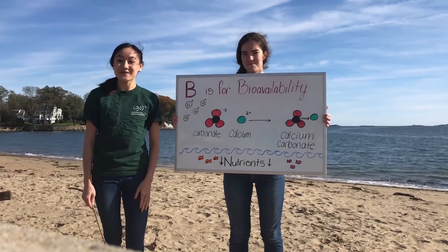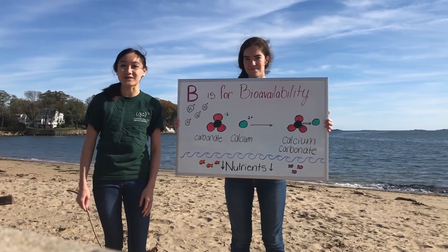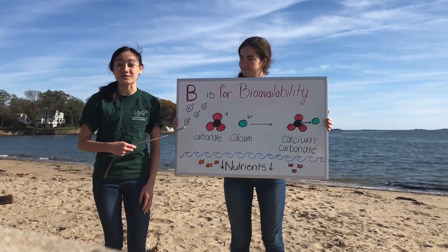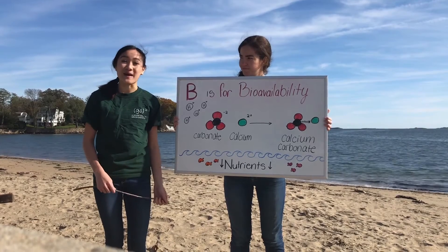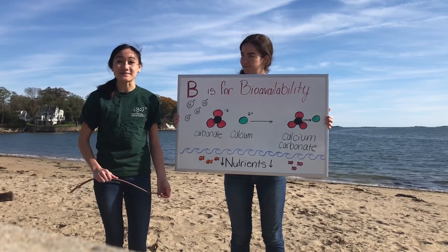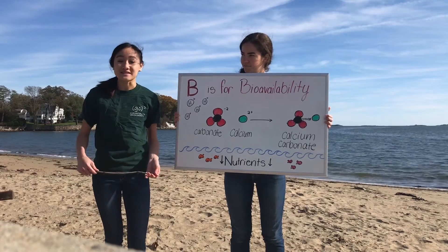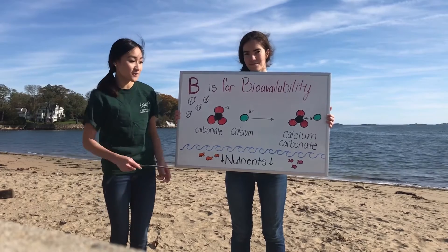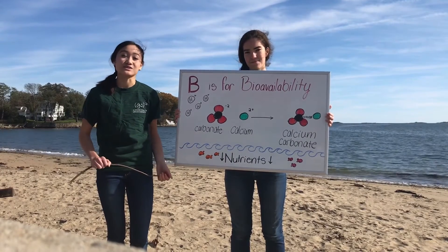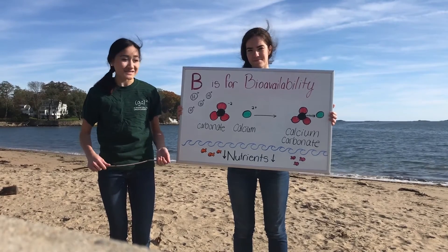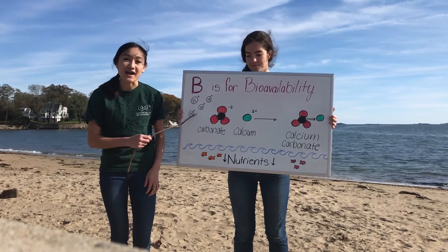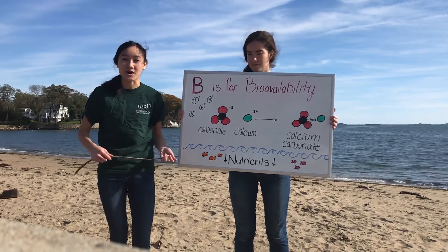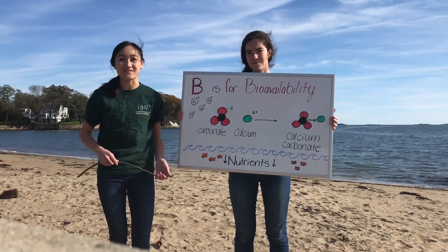B is for bioavailability, which is the amount of nutrients in water that organisms can use. These loose hydrogen ions do more than just lower the pH level — they also decrease the bioavailability of certain substances in the ocean. Two substances found in the ocean are carbonate and calcium, which join together to form calcium carbonate, which is very important to organisms in the ocean. The problem is, these extra hydrogen ions are stealing carbonate away from calcium, so there is less calcium carbonate and the bioavailability of it is decreasing.